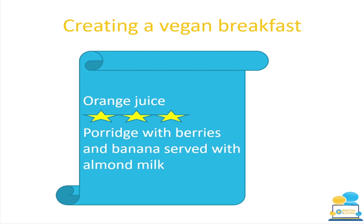Porridge with berries and bananas served with almond milk. Just saying 'porridge' won't get full marks. Adding 'with berries and bananas' gets more marks but not full marks. Saying 'porridge with berries and bananas served with almond milk' gets full marks — you need to be exactly specific. You could not write 'milk' as that implies dairy. Alternatives include almond milk, rice milk, coconut milk or soya milk.